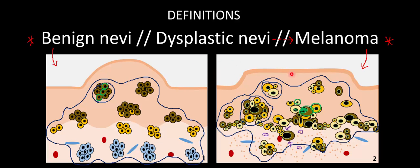Before we move on, there's one more point of clarification. It has to do with something that tripped me up when comparing these lesions to keratinocyte cancers — the squamous cell and basal cell carcinomas. If you remember, for those cancers, one of the hallmark features was invasion past the basement membrane of atypical keratinocytes into the underlying dermis.